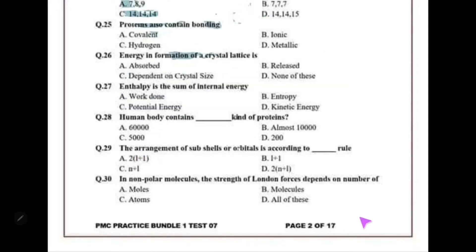The arrangement of sub-shells or orbitals is according to the n+l rule.